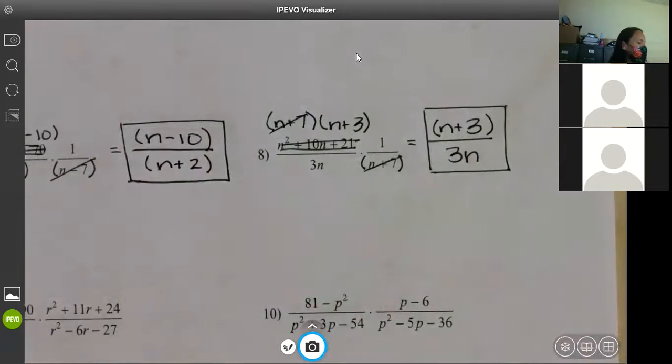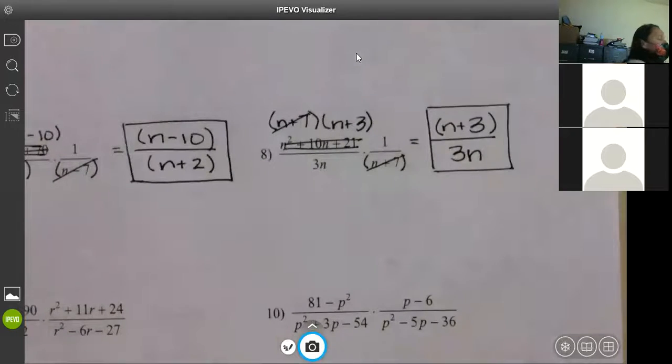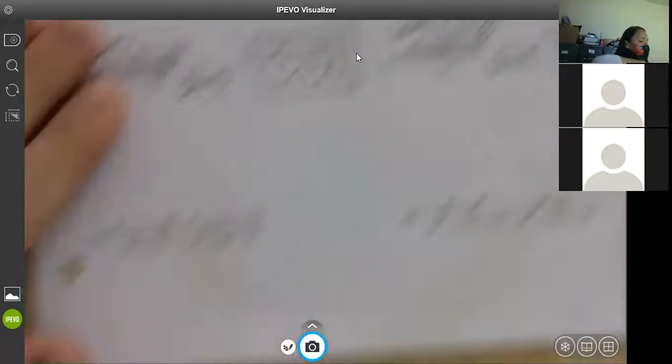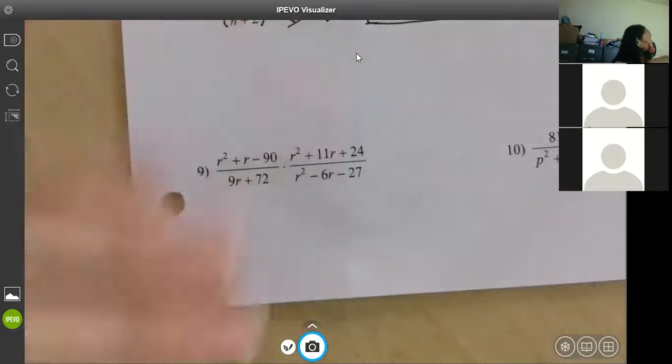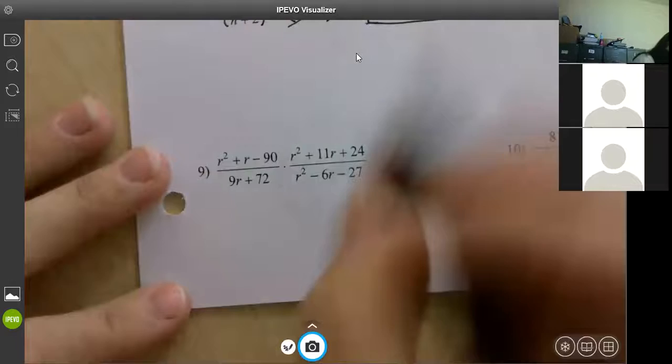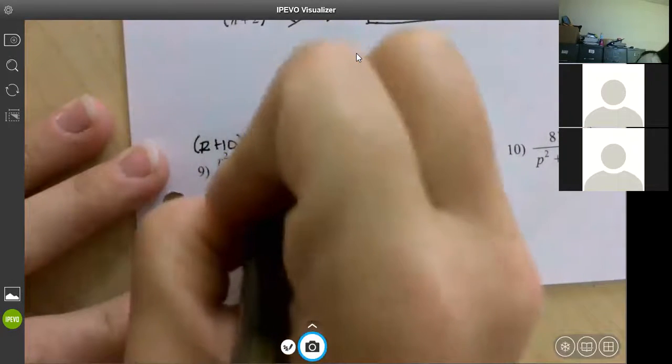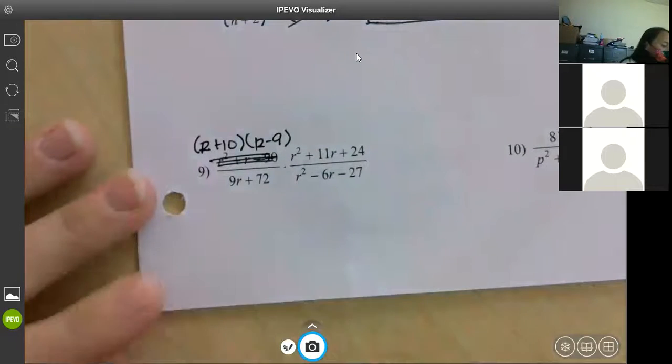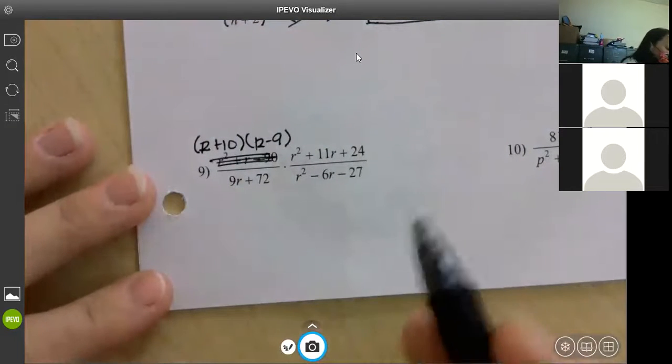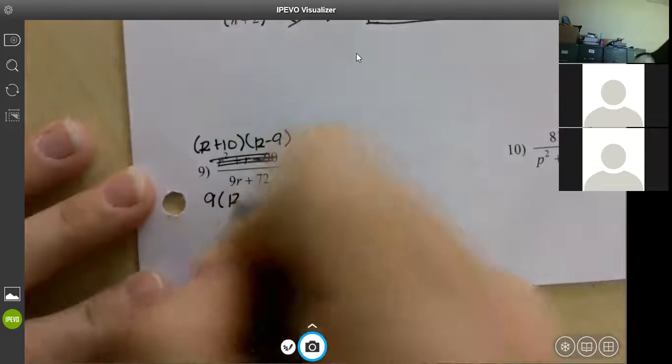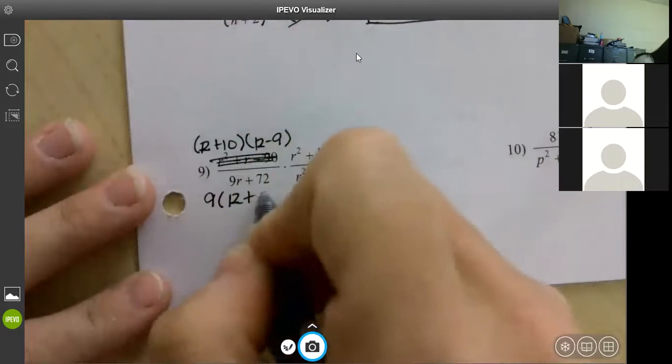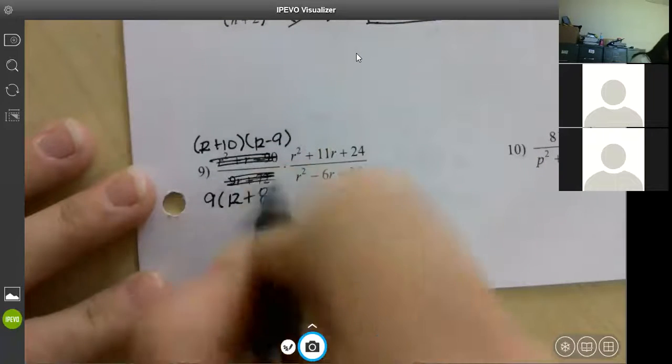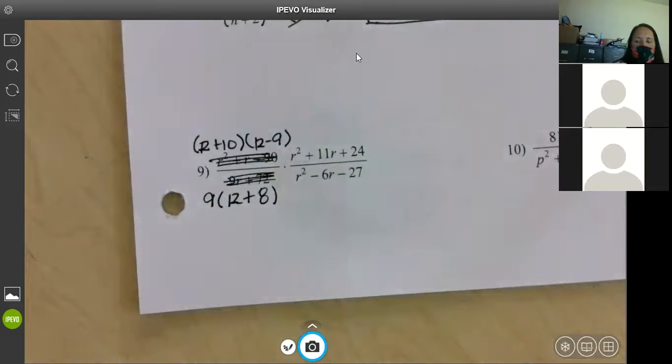Number nine, you're just doing more factoring. Again, it doesn't get any harder than this as long as you know your factors. So it gets longer because you have to do slide divides. It doesn't get harder. Factors of negative 90 that add to 1. 10 and negative 9. This one's done. How can I factor the bottom of that one? Take out a 9. What's that leave me with? R plus 8. That's perfect. So I'm going to mark that one out. It doesn't matter anymore. Factors of 24 that add to 11. 8 and 3. So R plus 8, R plus 3. Factors of negative 27 that add to negative 6. Negative 9 and positive 3.